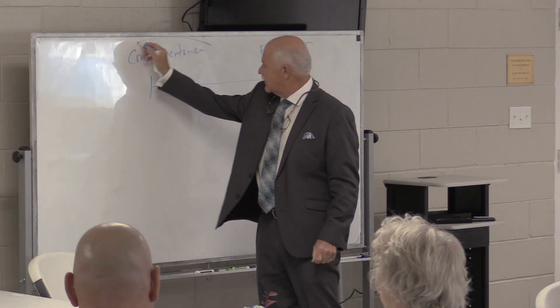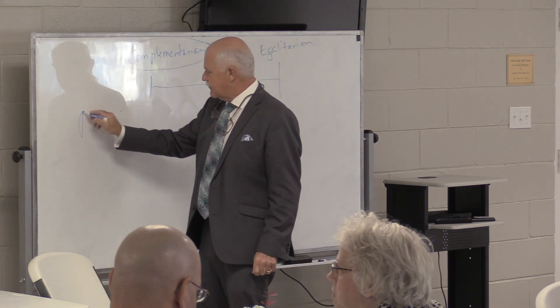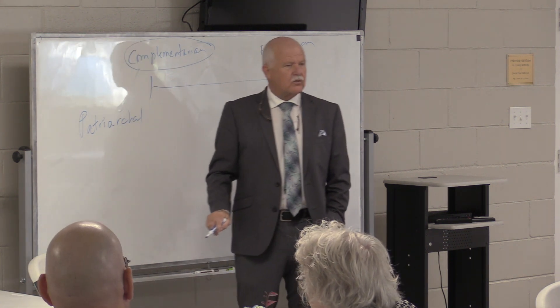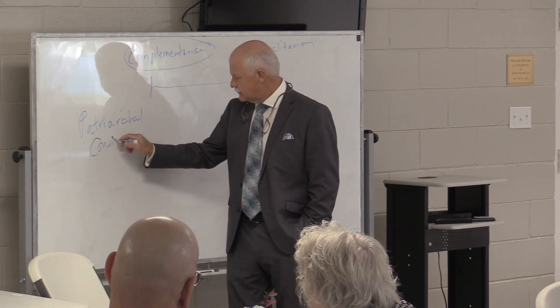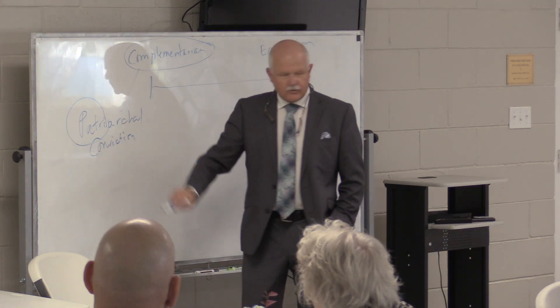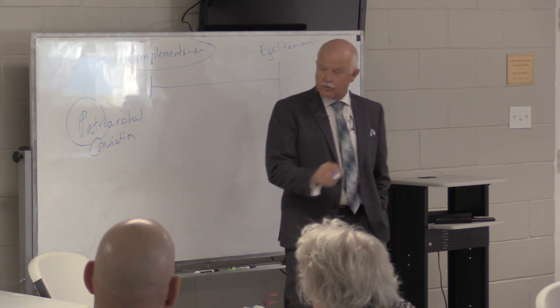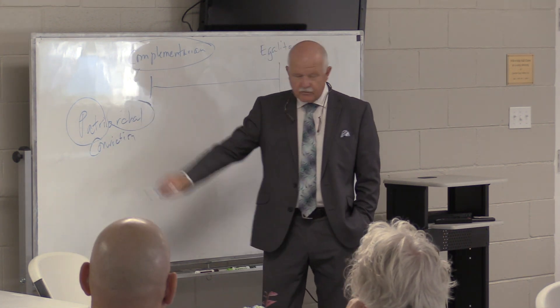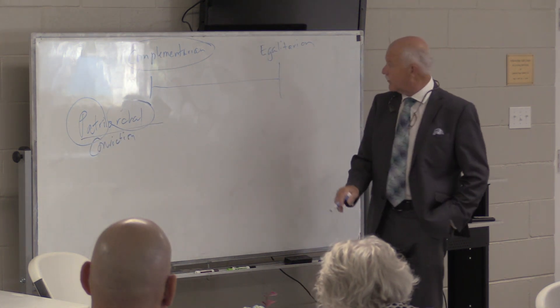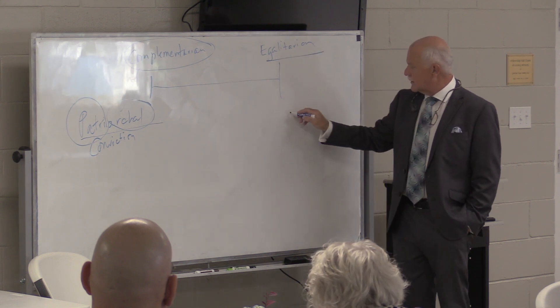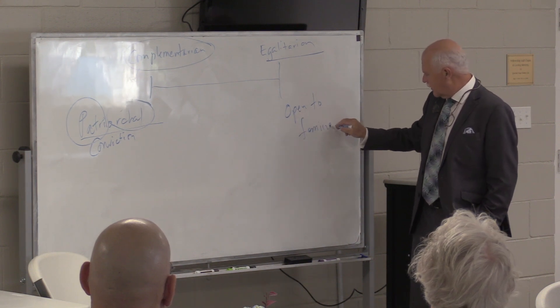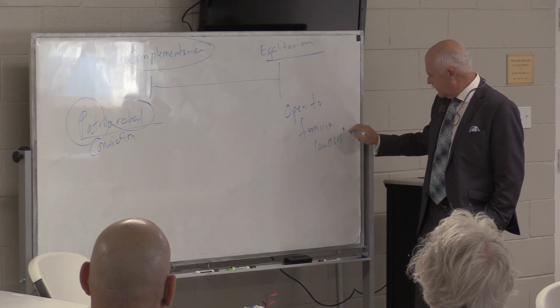When it comes down to it, we're going to face Jesus Christ with what we believe and how we conducted ourselves and how we followed him in this church. We want to make sure we know what these terms mean. Complementarian means patriarchal tendency or conviction of church leadership - male leadership. Egalitarian means that it is open to feminine leadership and governness.